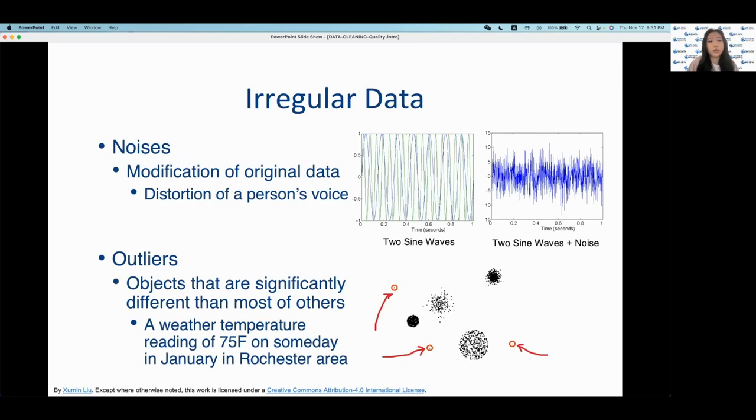Another type of data quality issue is irregular data, which could include noises and outliers, which I mentioned at the start of the presentation. So both noises and outliers should be removed because they can mislead analysis processes and reduce the quality of results. And noises are modifications of the original data. So it could be, for example, the distortion of a person's voice. Outliers are objects that are significantly different from other objects. So for example, if you're looking at a data set about temperature in Rochester in January, and you have one value of 75 degrees, it could be seen as an outlier if most of the values are within the range of 30 to 35 degrees.